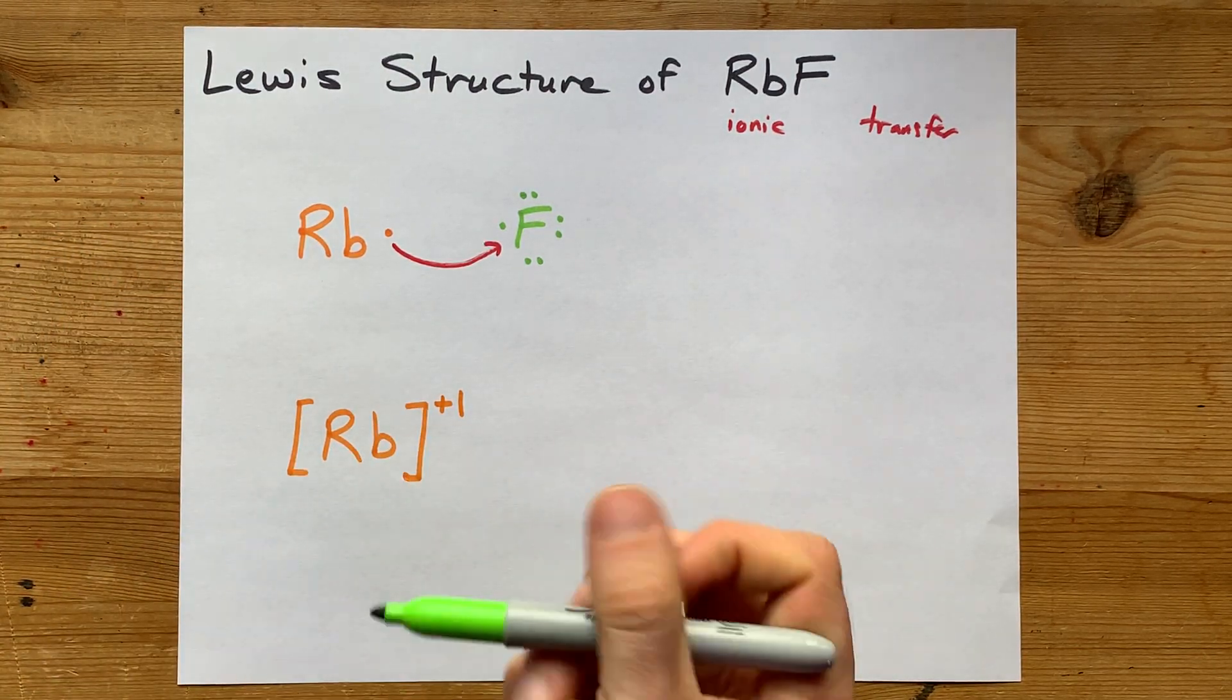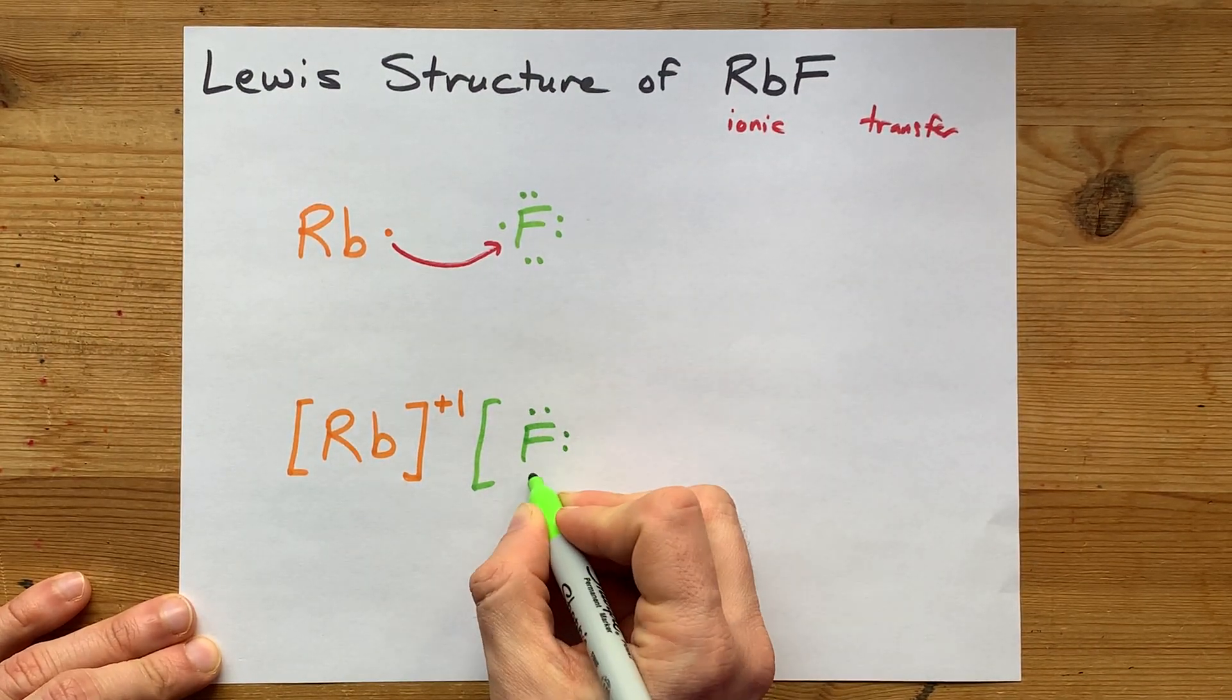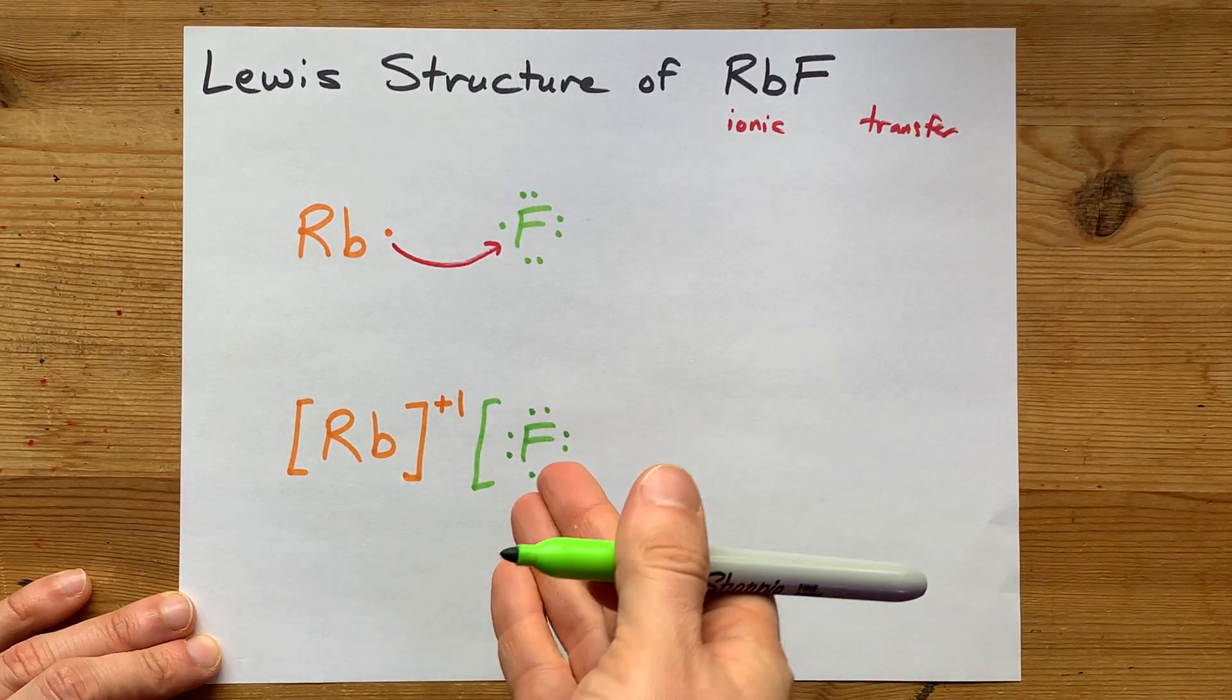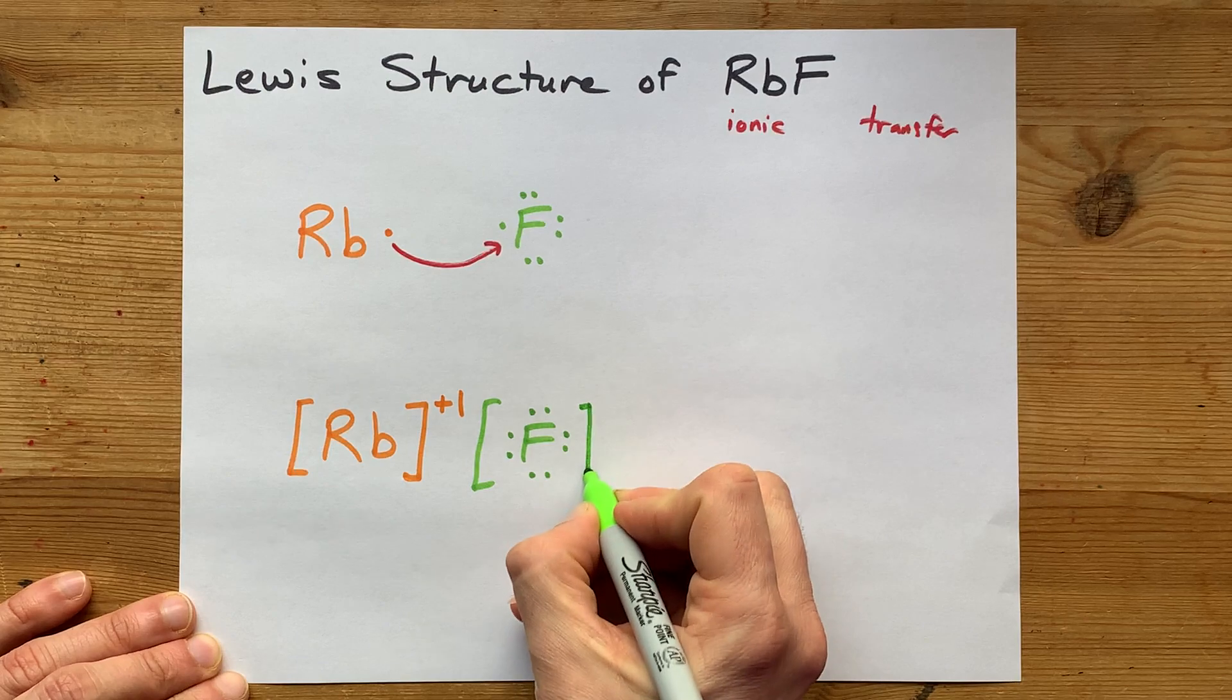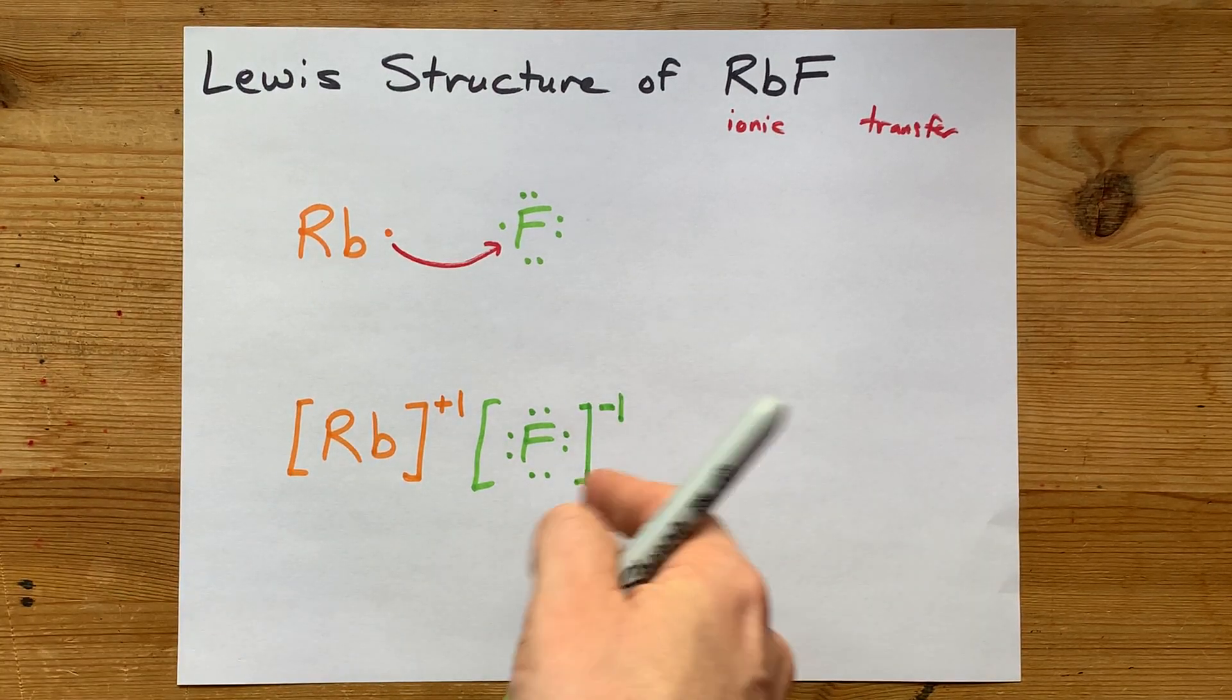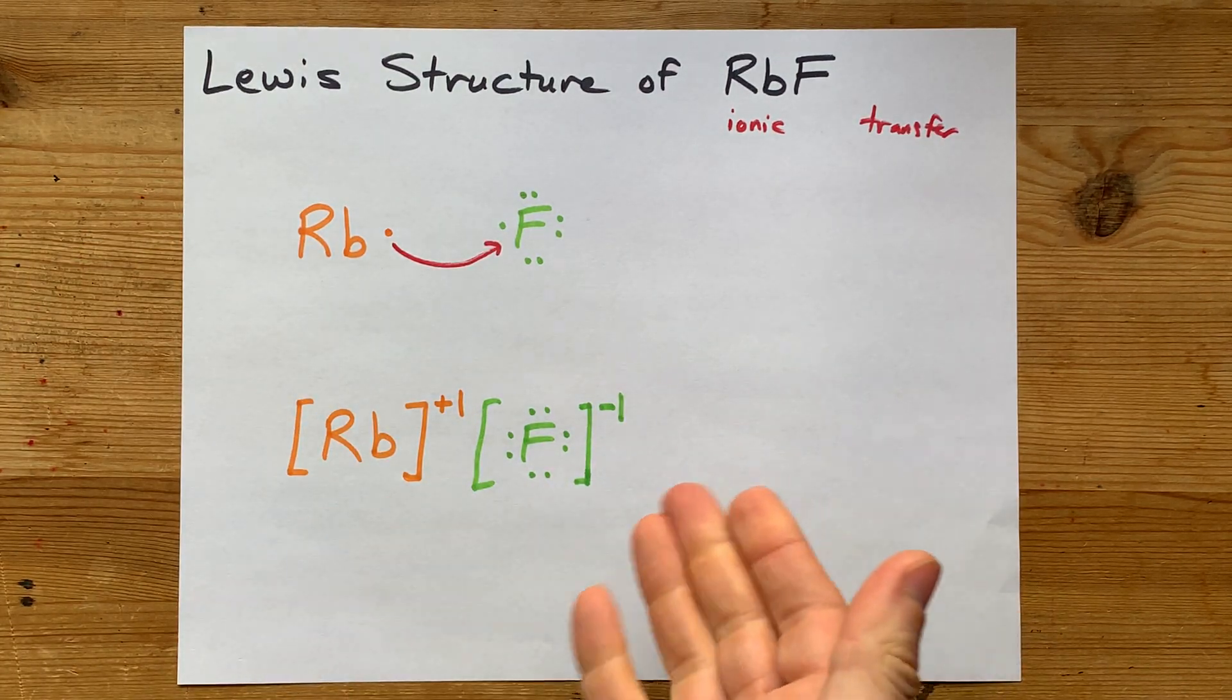Similarly, although actually in the opposite direction, fluorine has its seven valence electrons plus rubidiums, giving it eight. That's one more electron than it had, which is why it has a charge of minus one. It's now an ion, so put it in square brackets, and there you go.